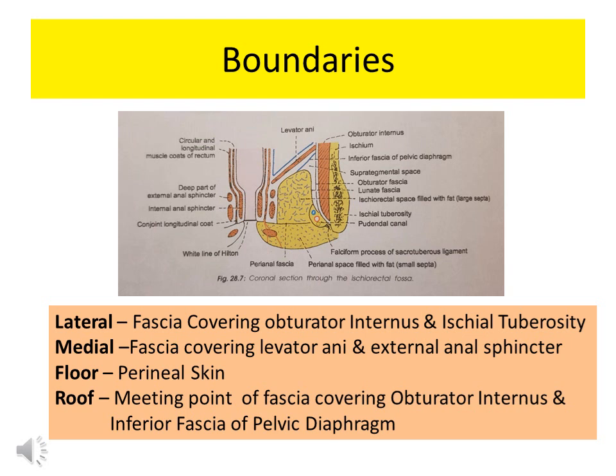The boundaries of ischioanal fossa are as follows. Laterally, there is a fascia covering the obturator internus muscle, and still outside you can see the ischial tuberosity below. The medial boundary is formed by the fascia covering the levator ani muscle, which forms the pelvic diaphragm, and the external anal sphincter. The floor is formed by the perineal skin.